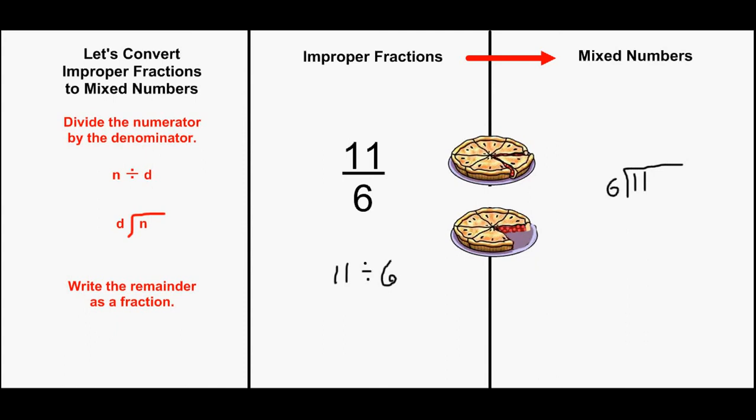11 divided by 6 is 1. 1 times 6 is 6. We'll subtract and get a remainder of 5 sixths.